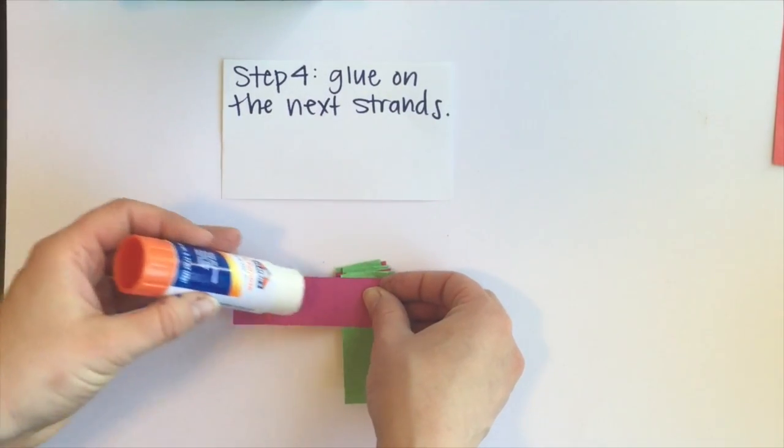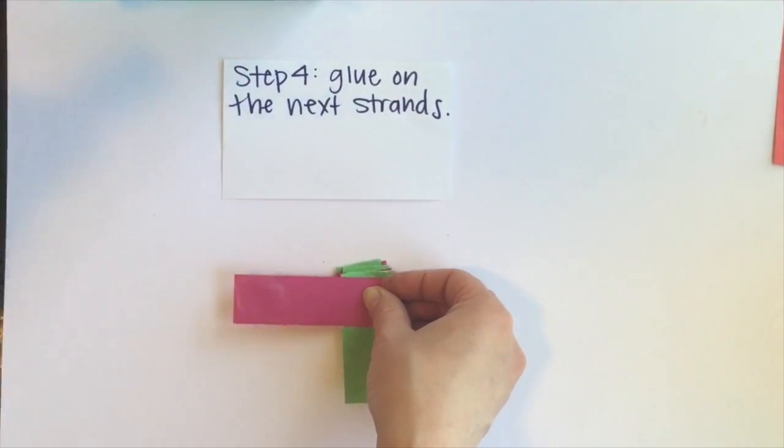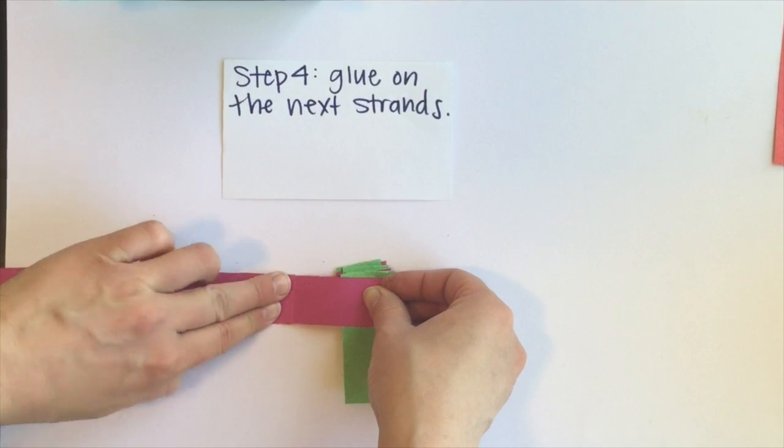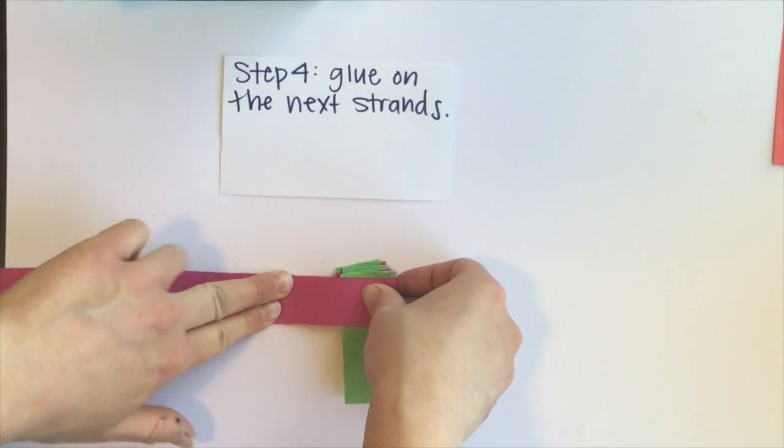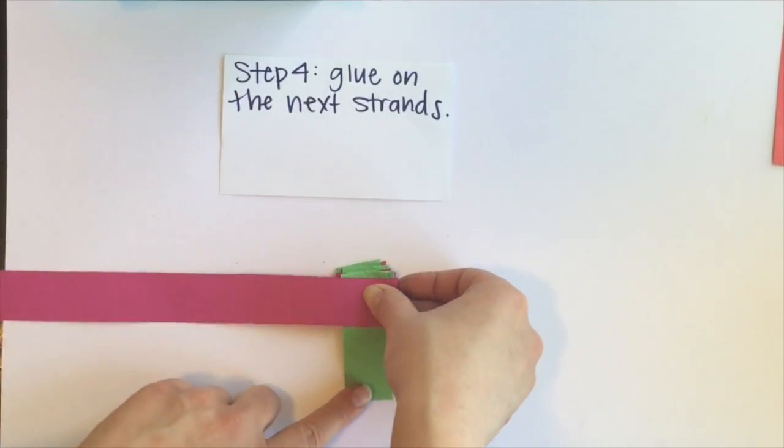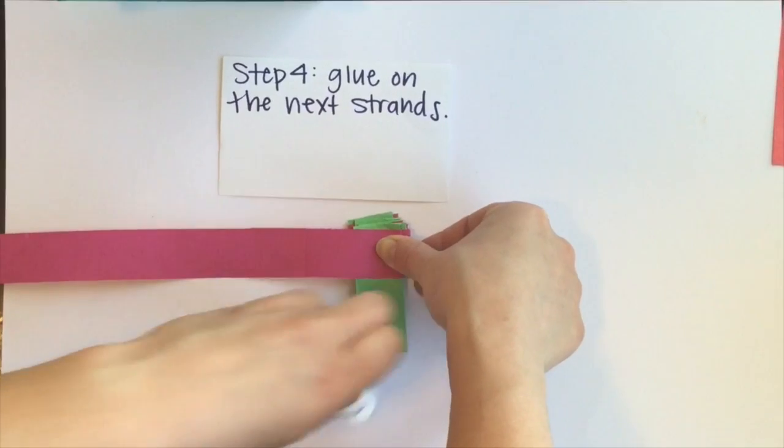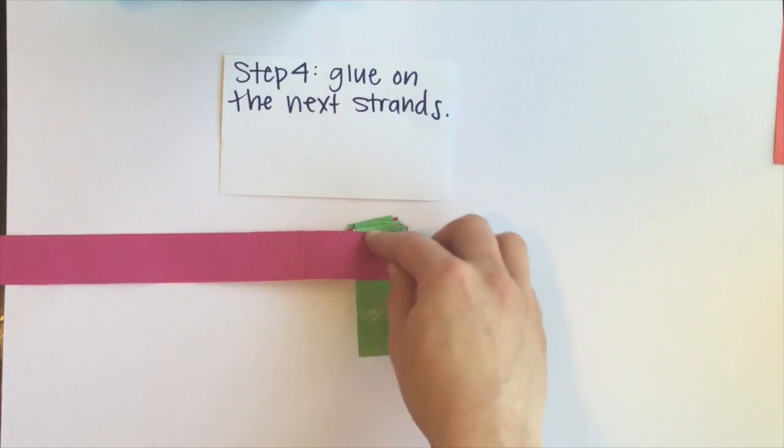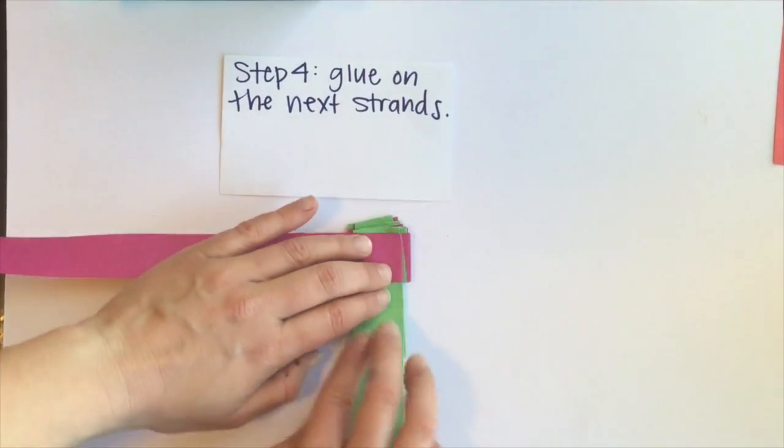So I want to extend the magenta, so I'm going to put some glue on the magenta and glue on the strand and I'm going to push and kind of hold it. And I'm going to do the same thing for the green one. Add glue to the end and I'm holding this down the whole time so it doesn't kind of go away. Take the green strand, glue that one on.